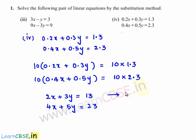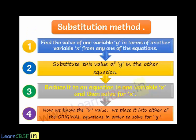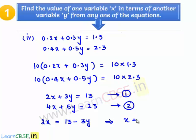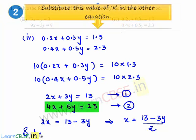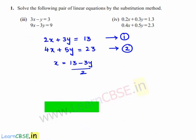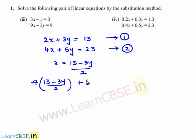Let this be equation number 1 and this be equation number 2. Now, the first equation can be written as 2x is equal to 13 minus 3y, which implies x is equal to 13 minus 3y divided by 2. Let us substitute this value of x into the second equation, which becomes 4 times of (13 minus 3y) divided by 2 plus 5y is equal to 23.